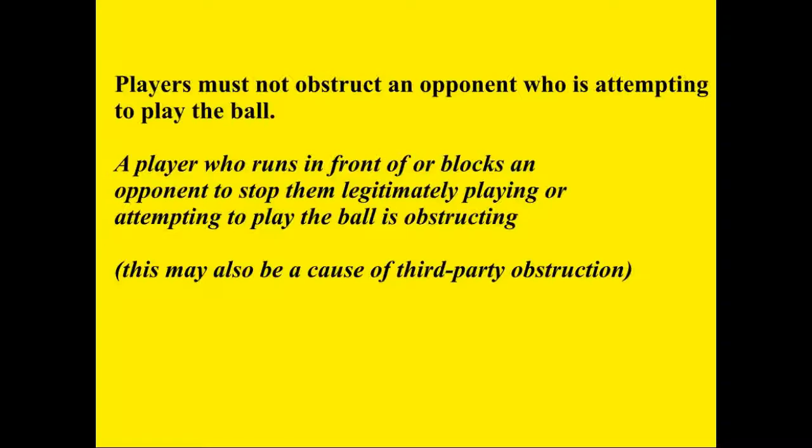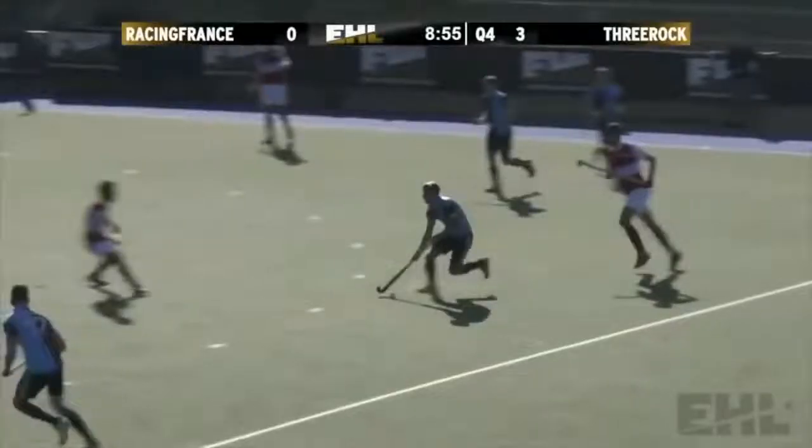A player who runs in front of or blocks an opponent to stop them legitimately playing or attempting to play at the ball is obstructing — this is prevention of a tackle attempt obviously. The rule book states, in parenthesis, 'this may also be third party or shadow obstruction.' I have written it as 'this may also be a cause of third party obstruction,' because running in front of or blocking a player is obviously something that a person in possession of the ball can do as well. So the question is: does the attacker block the attempt of the defender to play or attempt to play at the ball? The answer is obviously yes.